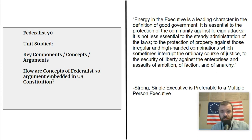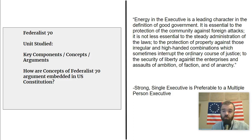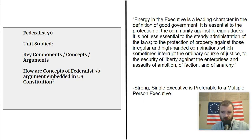Much of Hamilton's arguments are embedded in the Constitution — we exactly have a single executive with important constitutional powers. Most importantly, one would argue, the commander-in-chief of the military, which is their primary function: essential to the protection of the community against foreign attacks. If you're someone who is a proponent of strong executive authority under Article II, Federalist 70 is where you'll find your argument from the founders. Many people were concerned about a strong executive because of what the new nation had gone through with a strong executive in a monarchy with the British. So that's what the Anti-Federalists are trying to avoid, but Hamilton says you still need strong executive authority.